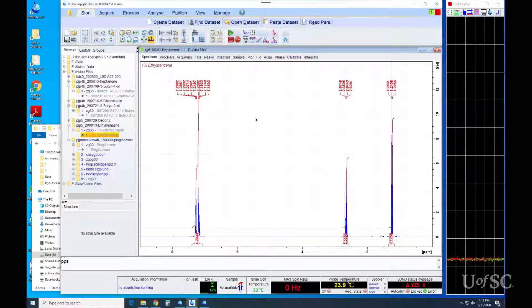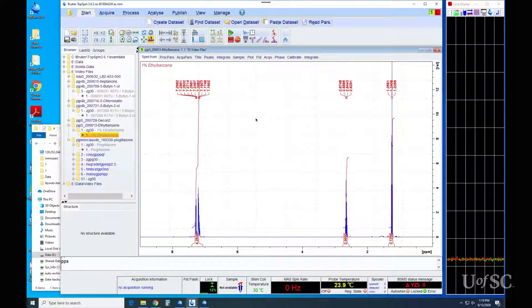The multiplet analysis tool is a routine that helps sort out multiplets in proton spectra. Its output can give you an organized list of chemical shifts, multiplet types, and coupling constants. It is a time-saving tool that most users could apply to interpreting their NMR spectra.